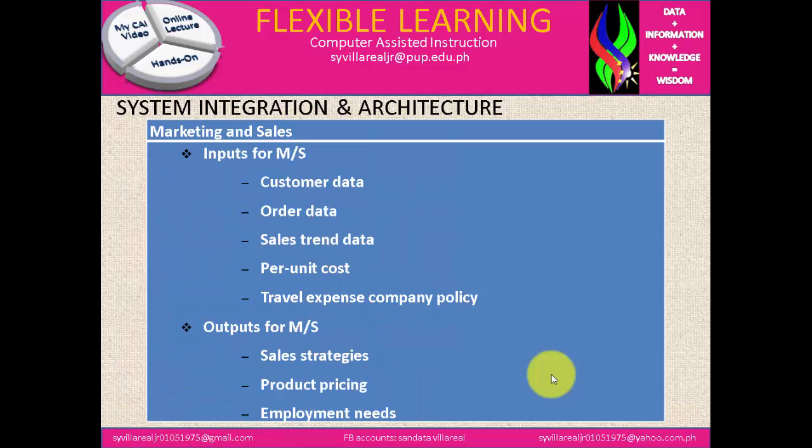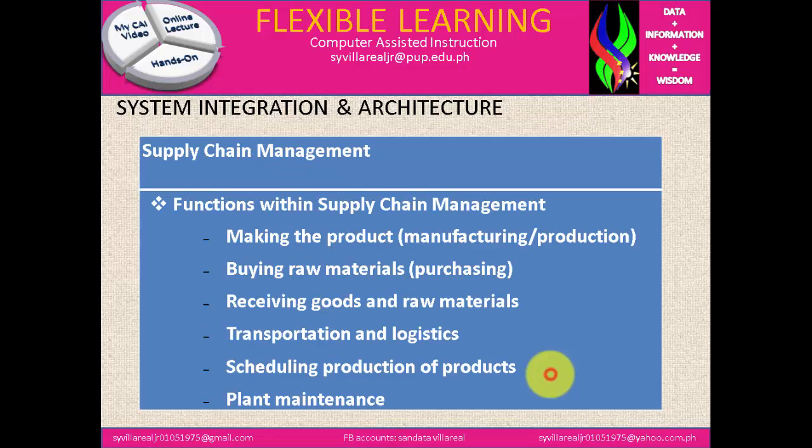Under inputs for marketing and sales, we have: customer data, order data, sales trend data, per unit cost, travel expense, and company profile. Under outputs, we have: sales strategies, product pricing, and employment needs.